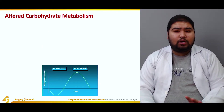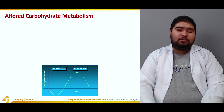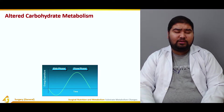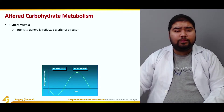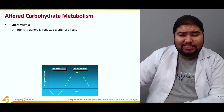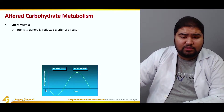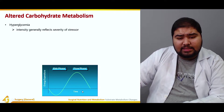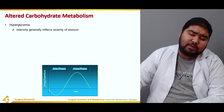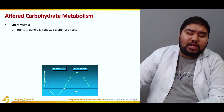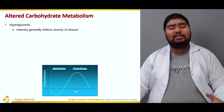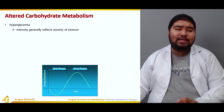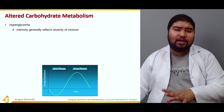This altered carbohydrate metabolism can be divided into the ebb phase and the flow phase, represented by the graph shown below. The intensity of hyperglycemia reflects the severity of the stressor. On the graph, the x-axis is time and the y-axis is energy expenditure. In the ebb phase, there is a decrease in energy expenditure as the body tries to conserve energy. In the flow phase, energy expenditure is increased and directly related to the stressor.